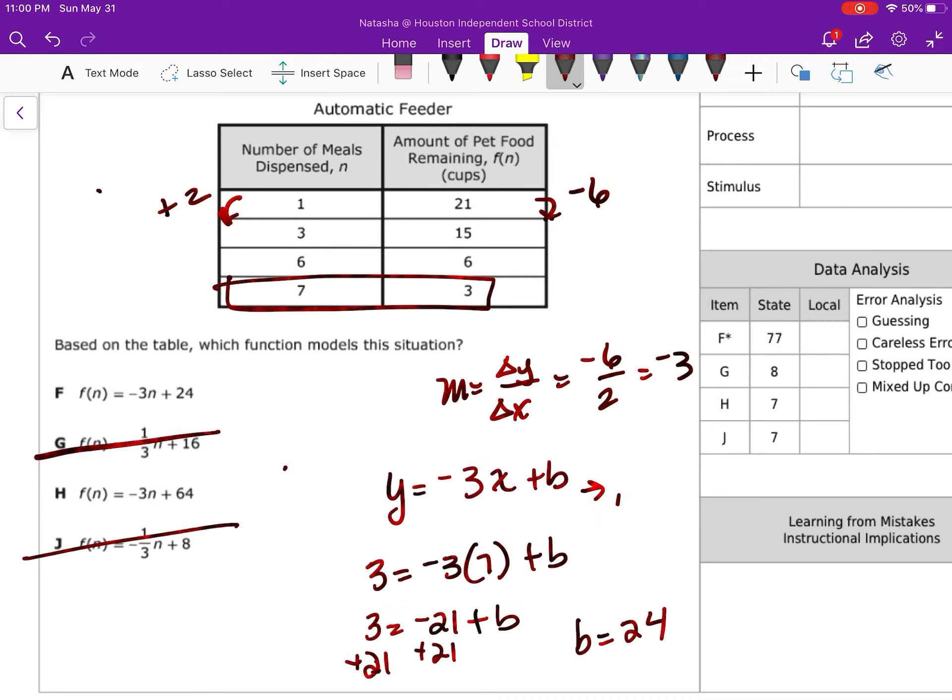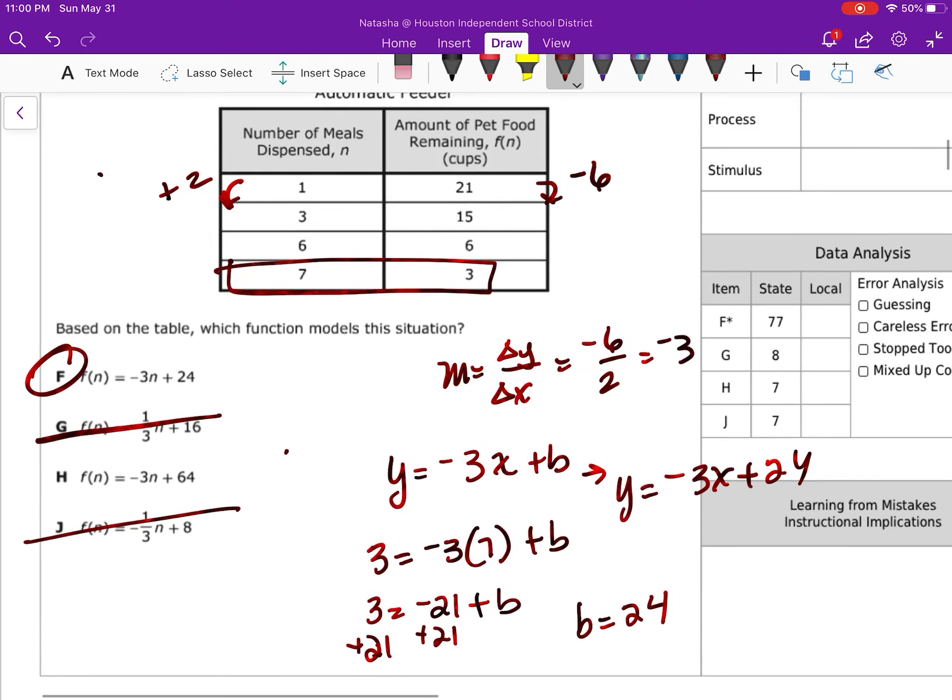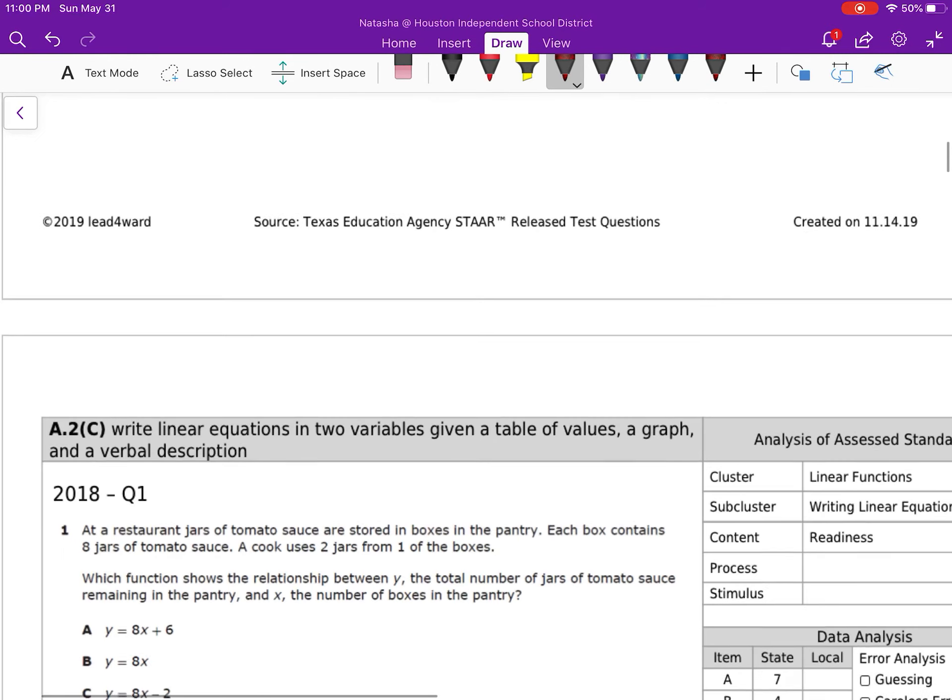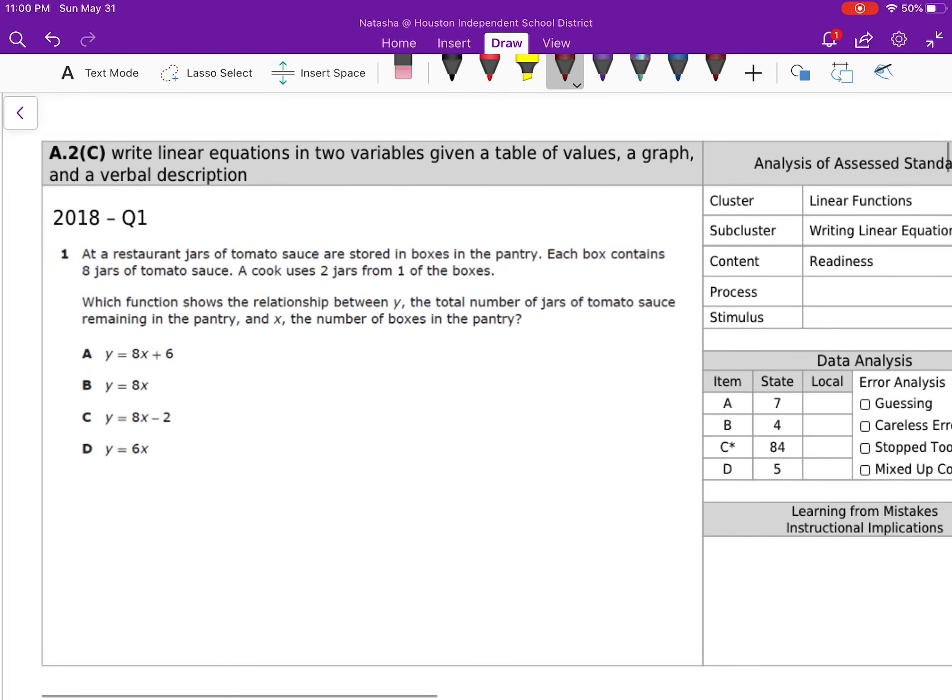So my equation when I rewrite this is going to be y is equal to negative 3x plus 24, which is our answer choice f, or n instead of x.